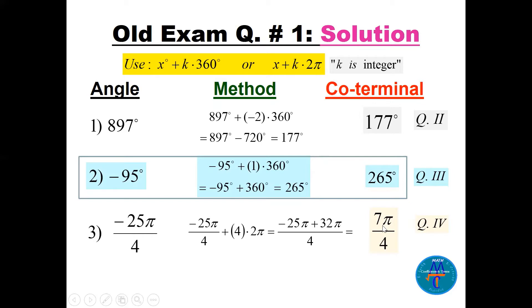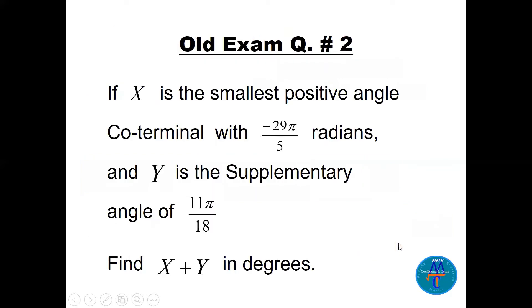We add 4 times 2π because 4 times 2 is 8. Finding the LCD, which is 4, and adding the fractions: 32π minus 25π gives 7π/4. That's the first positive angle between 0 and 2π, and it lies in quadrant 4.